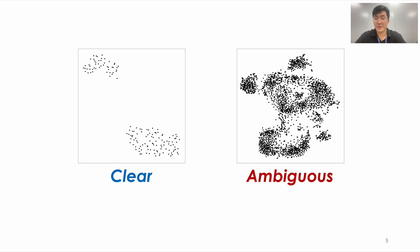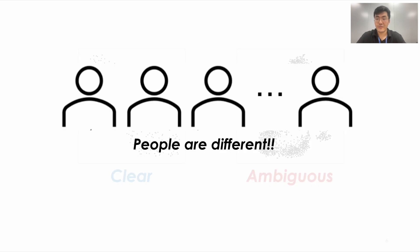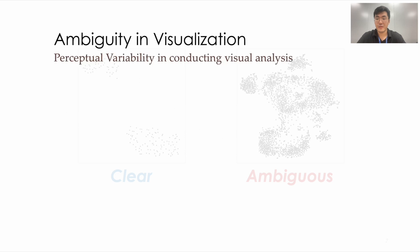In other words, we can say that the first scatterplot shows a clear cluster structure, while the second scatterplot has an ambiguous structure. Another finding here is that people are all different. Even with the same scatterplot, the way of perceiving the structure varies by person. Moreover, such variability truly differs by scatterplot. We call this concept ambiguity.